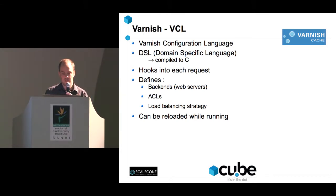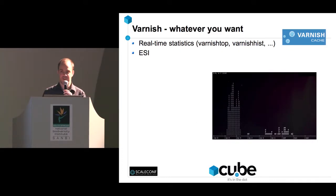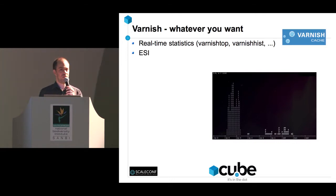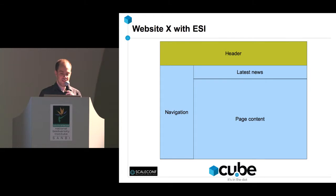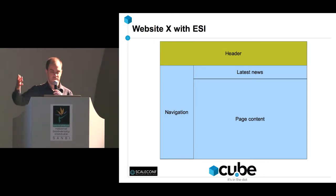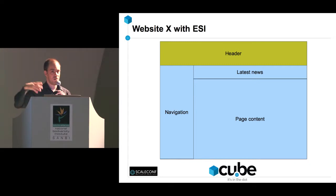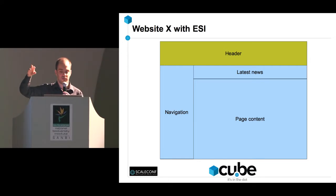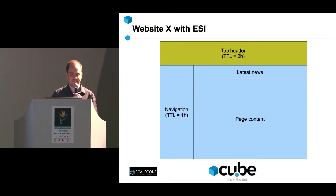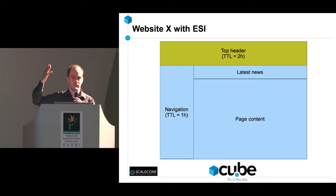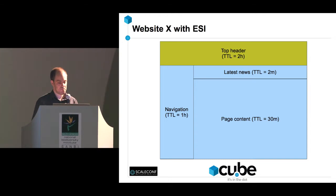VCL can be reloaded and recompiles while Varnish is running — no restart needed. Varnish also provides fancy console-based statistics. There's also a feature called ESI — Edge Side Includes. ESI was developed by Akamai Technologies, the content distribution network. Take a typical site: a header at the top with the company logo, a navigation structure on the left, latest news, and page content. The header and navigation don't change much — cache for one or two hours. Latest news changes more frequently, page content maybe every 30 minutes.